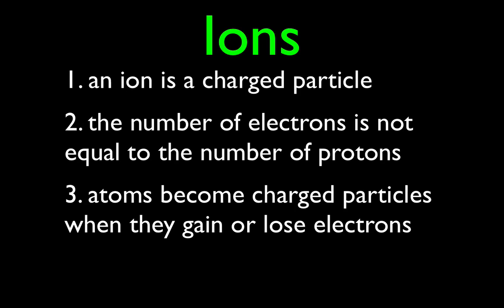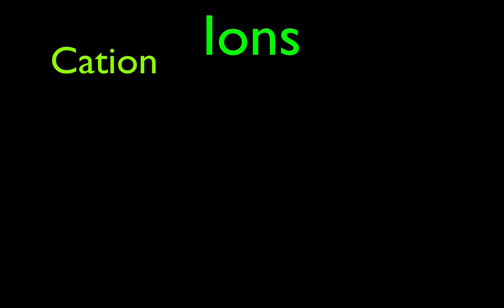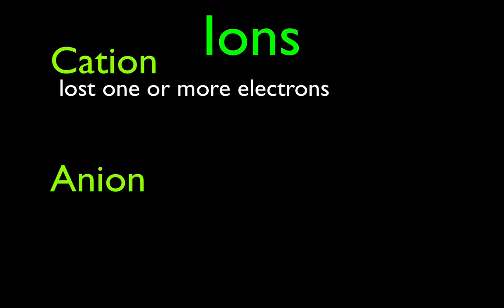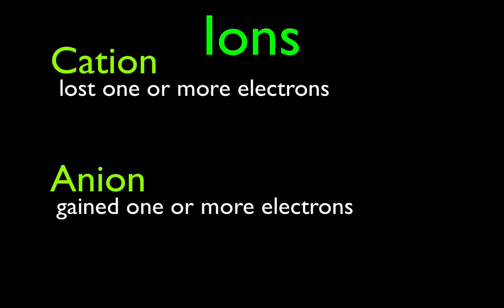You cannot really gain or lose protons — they're too tightly held in the nucleus. So an ion is a charged particle where the number of electrons is not equal to the number of protons. Atoms become charged when they gain or lose electrons. Now there are two kinds of ions: the cation and the anion. When an atom loses one or more electrons, it becomes a cation. When an atom gains one or more electrons, it becomes an anion.